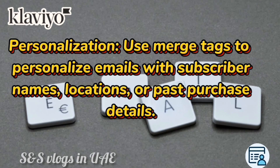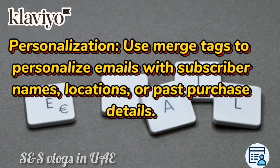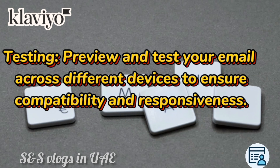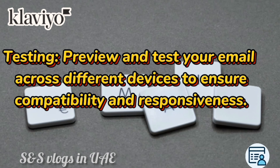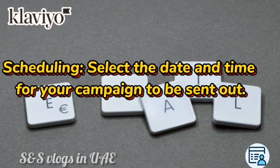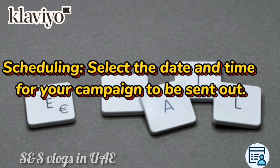Personalization: use merge tags to personalize emails with subscriber names, locations, or past purchase details. Testing: preview and test your email across different devices to ensure compatibility and responsiveness. Scheduling: select the date and time for your campaign to be sent out.